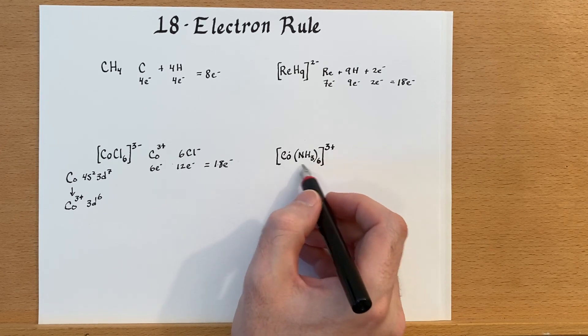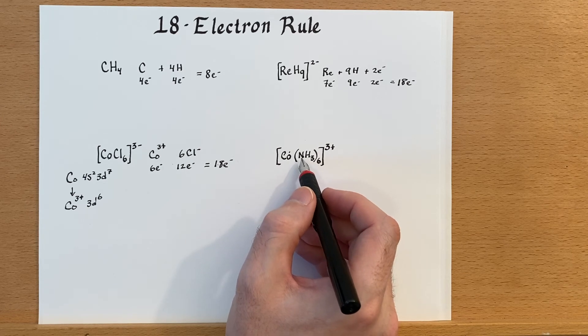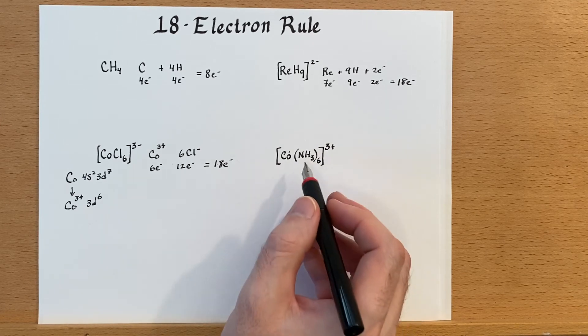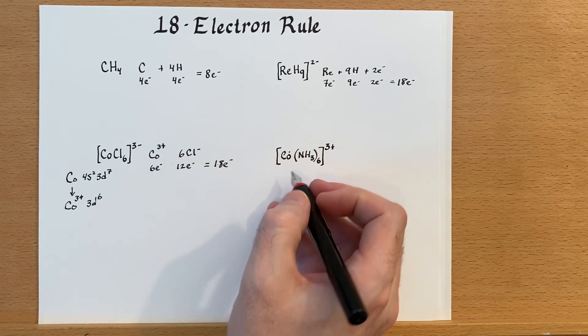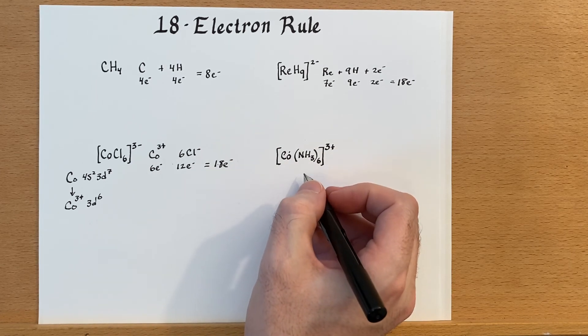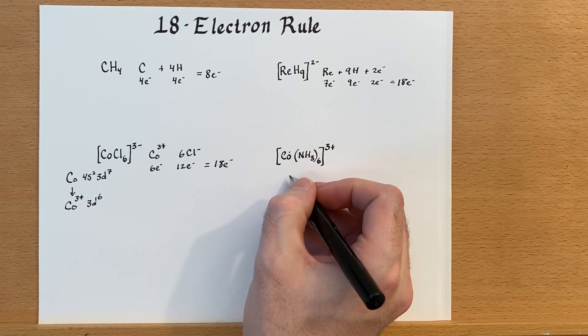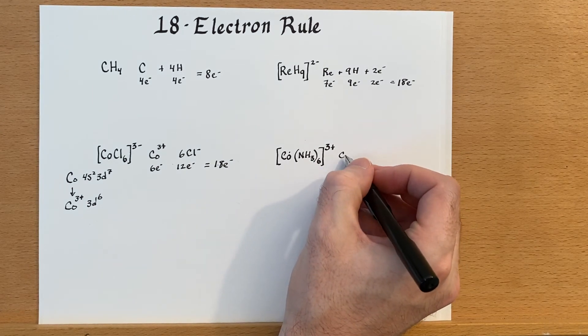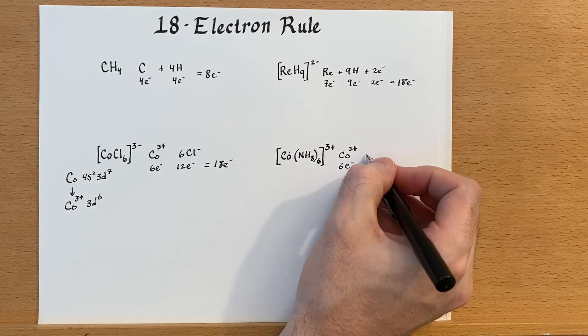This is again cobalt 3 plus. And again, this ligand right here is a neutral one, ammonia. It's giving two electrons apiece. So this is exactly the same as the one over here; it's just that the ligand is not charged. So this is hexamine cobalt 3 plus. And in this case we have cobalt 3 plus giving us six electrons.